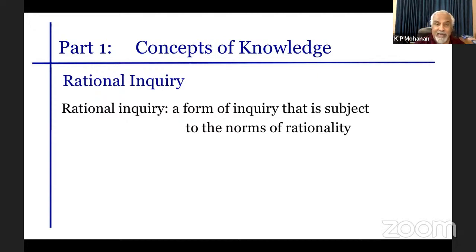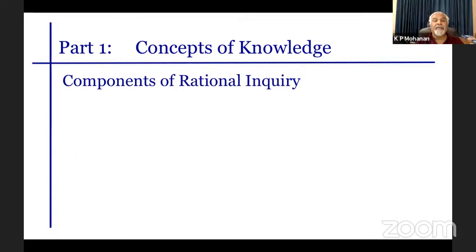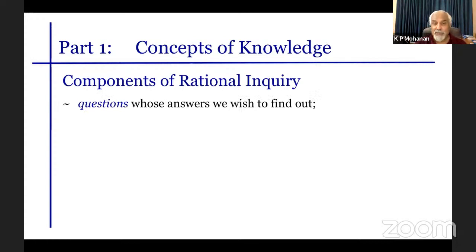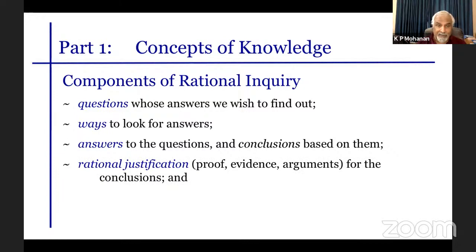Rational inquiry is a form of inquiry subject to the norms of rationality. The components of rational inquiry are: questions whose answers we wish to find out, ways to look for answers through methodology, answers to questions, and conclusions based on the answers — all the same as regular inquiry. But here is the important part: rational justification. The conclusions we arrive at must be rationally justified, supported by evidence, arguments, etc. Thinking critically about conclusions and justification is a special condition for rational, and hence academic, inquiry.